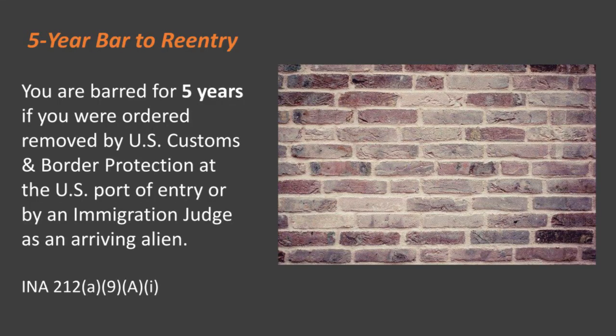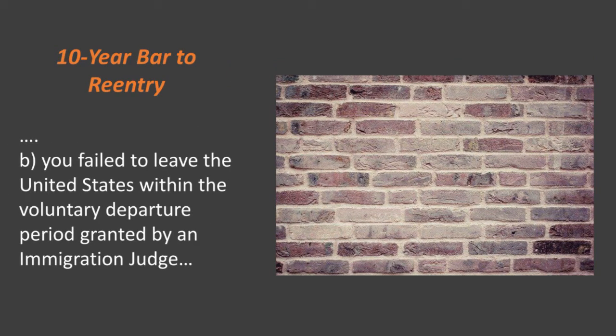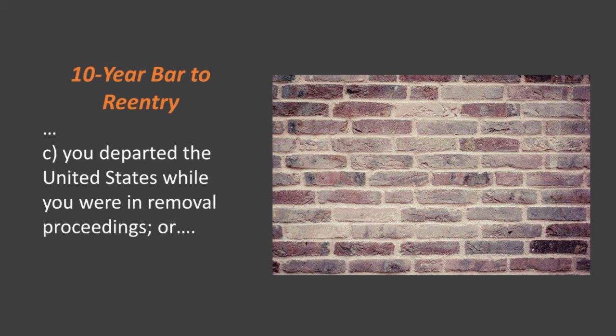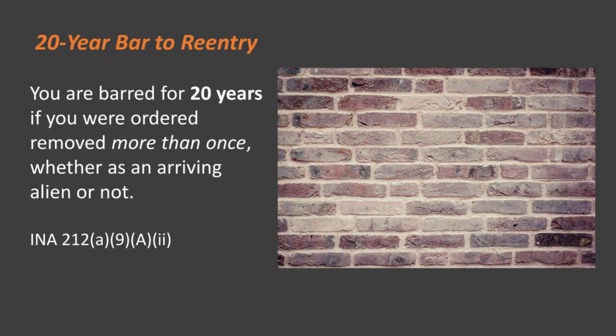The first is the 5-year bar. You are barred for 5 years if you're removed by US Customs and Border Protection at the US Port of Entry or by an immigration judge as an arriving alien. The second is the 10-year bar. You are barred for 10 years if you were: A, ordered removed by an immigration judge other than as an arriving alien; B, you failed to leave the US within the voluntary departure period granted by an immigration judge; C, you departed the US while you were in removal proceedings; or D, you left the US while the removal order was in effect.